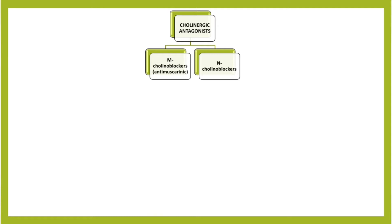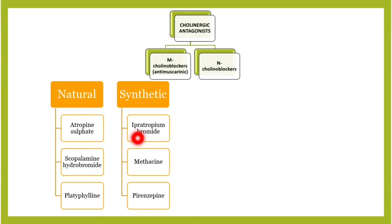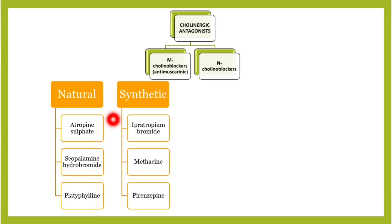M-cholinergic blockers can be further grouped into natural and synthetic. Natural cholinergic blockers include atropine, scopolamine, and platyphylline. Synthetic blockers include ipratropium, triatropium, metacine, pyrenzepine, and others.